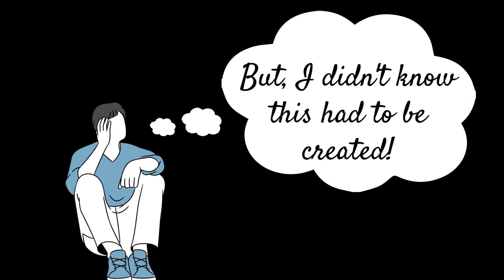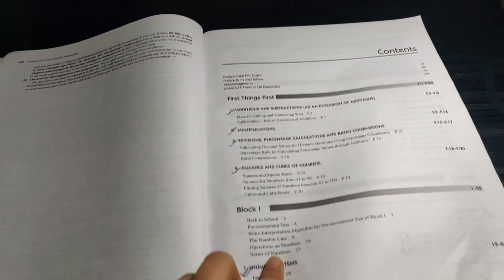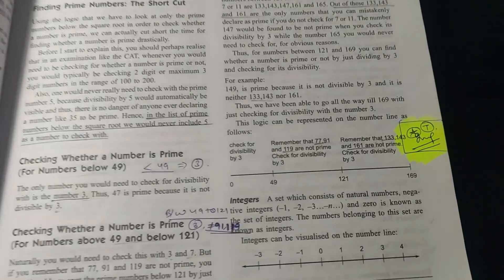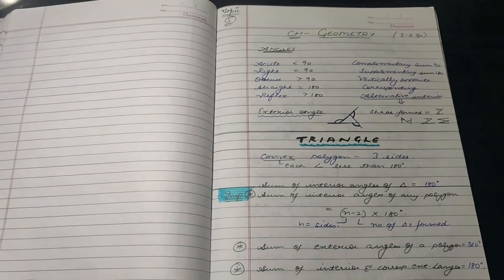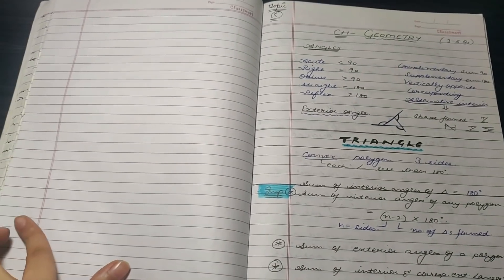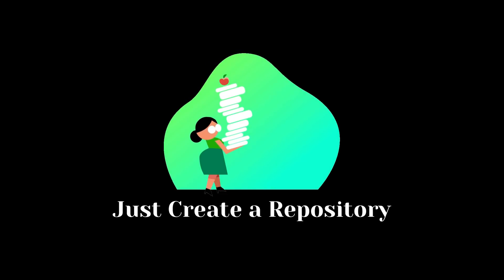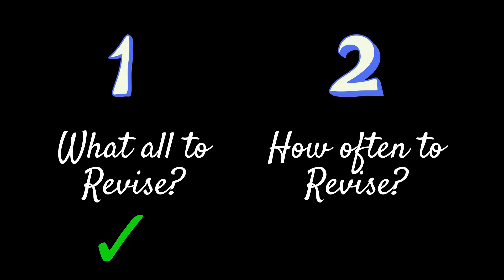For those of you who have already started preparation and are just realising a formula book needs to be created: for the chapters you've already covered, just revisit the book, open the chapter, read the theory, and spot formulas to note down. After that, leave some blank pages so that when you come across more tricks during the mocks, you can fill those in. The only thing you need to do is create a repository of formulas and tricks you're coming across.